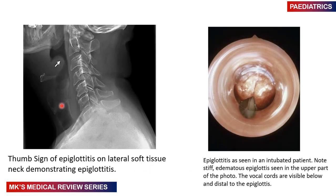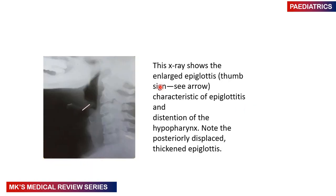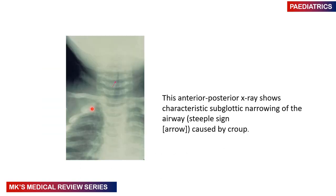The thumbprint sign on a lateral soft tissue x-ray of the neck demonstrates the swollen epiglottis, which appears thickened and displaced posteriorly — characteristic of epiglottitis with distension of the pharynx. On the right of the diagram, a patient being intubated shows the stiff edematous epiglottis, with the vocal cords visible just below and distal to the epiglottis. This must be differentiated from the steeple sign seen in croup, which represents narrowing of the subglottic airway.